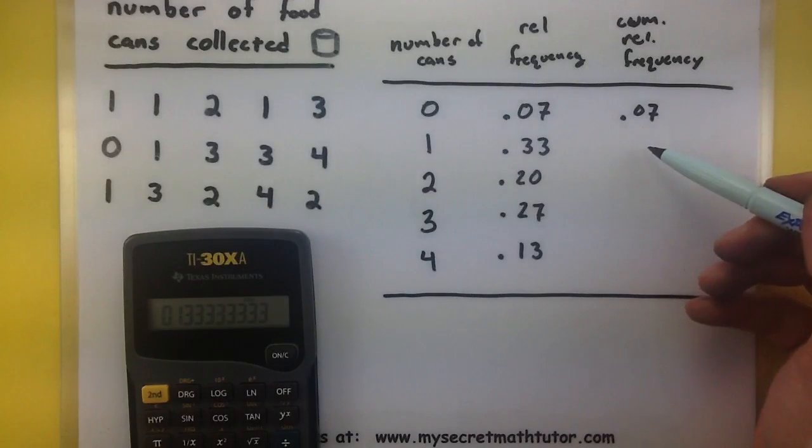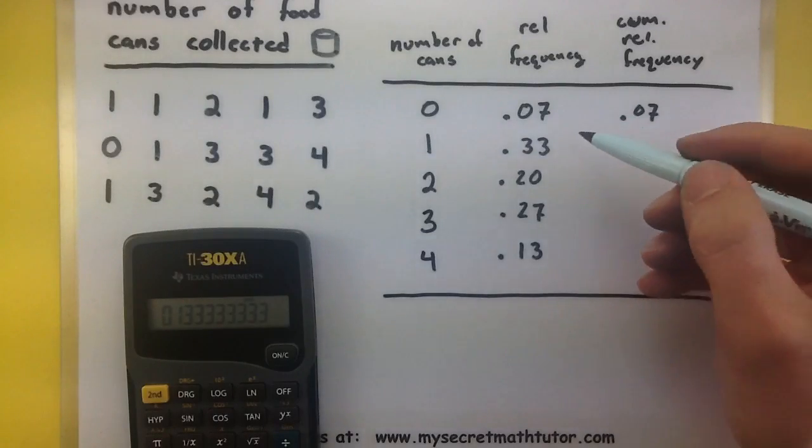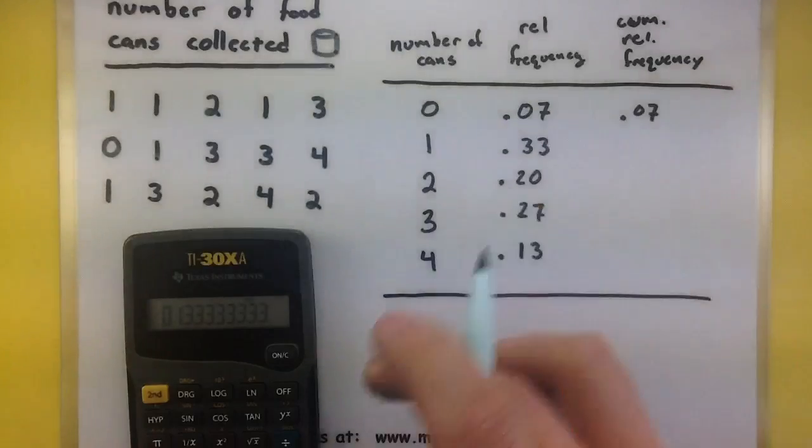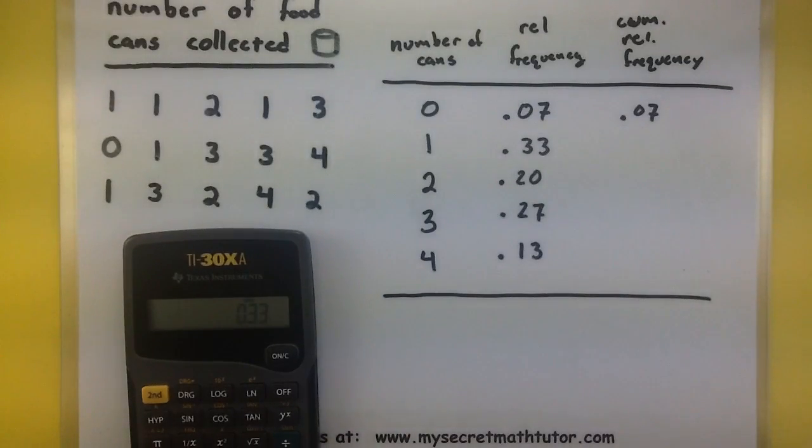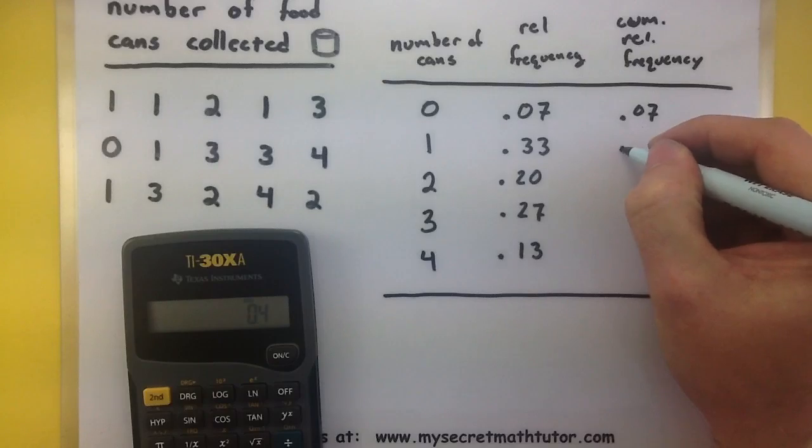For my next data value, I want the total relative frequency up to this point. So this would be .33 plus .07. So now my total is up to .4.